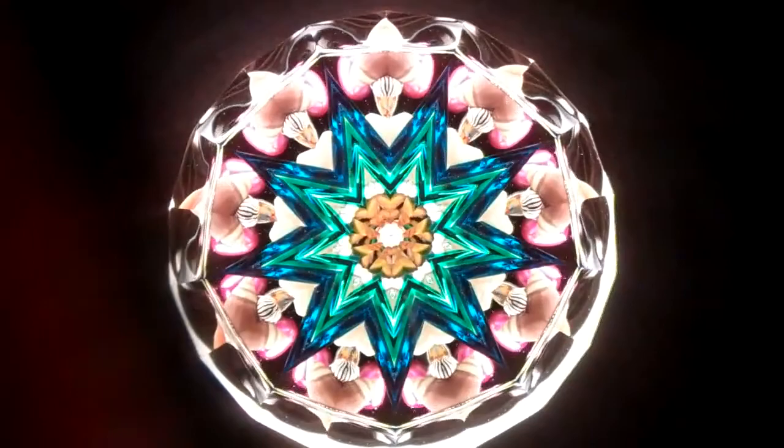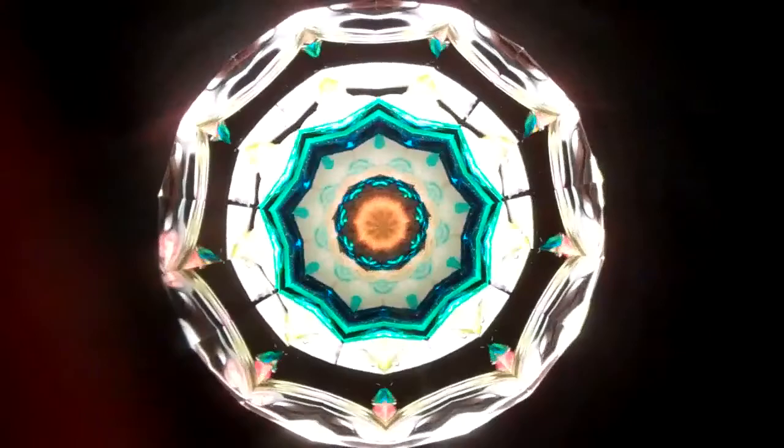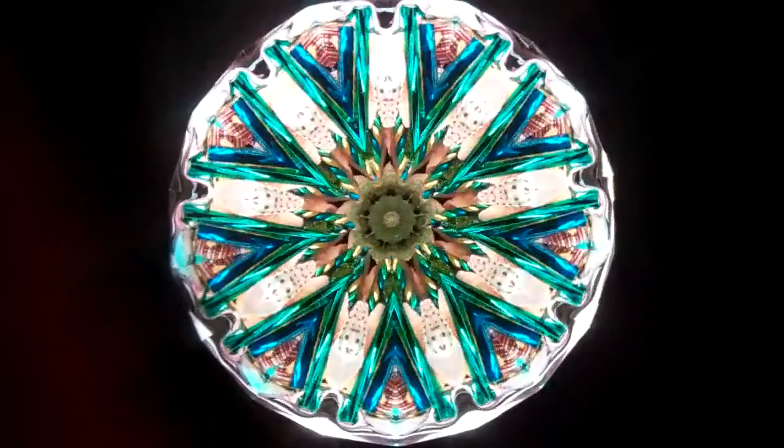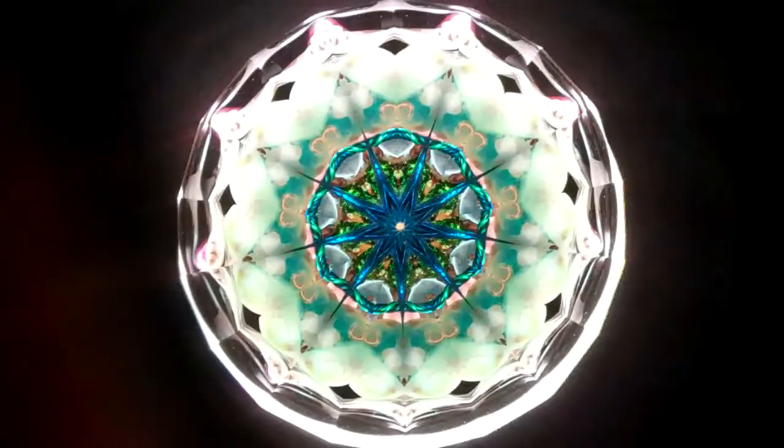This is in their It Figures Handheld Kaleidoscope Series featuring a wonderful two-mirror system with a vibrant object chamber. It is oil-filled so the objects will continue to float after you turn the chamber, and the symmetry on this mirror system is wonderful.